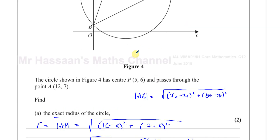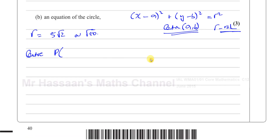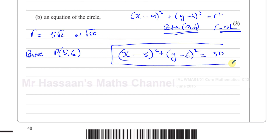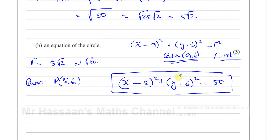The center is P(5,6). So applying the formula: (x minus 5) squared plus (y minus 6) squared equals r squared, which is (root 50) squared, which equals 50. So the equation of the circle is (x − 5)² + (y − 6)² = 50. You can also express this in expanded form, but there's no need to do that here — this is perfectly fine as your answer. That's part A and B done.